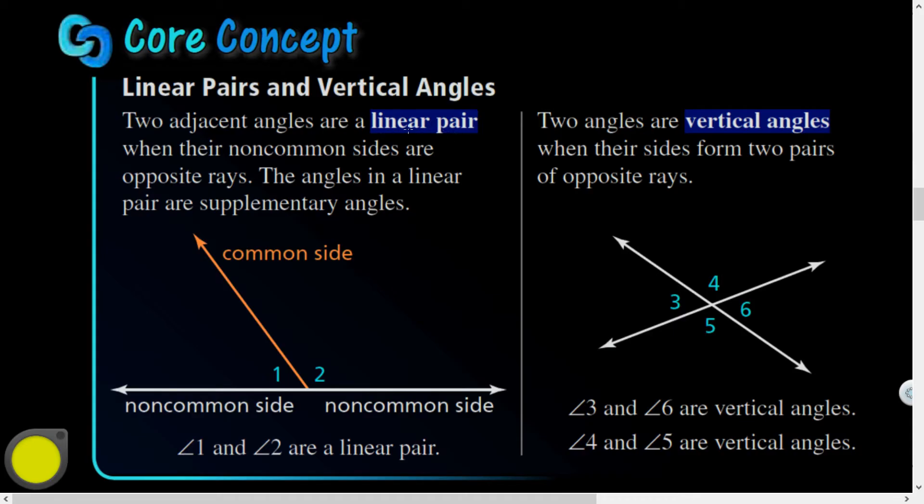Two adjacent angles are a linear pair. So first of all, they're adjacent. That means they have a common vertex, common side. And they're not overlapping, they're interiors. And they are a linear pair when their non-common sides form opposite rays. Notice, so here's its non-common side, and its non-common side, and they are just, like, the most opposite rays you've ever seen. They've got a common vertex heading in opposite directions.